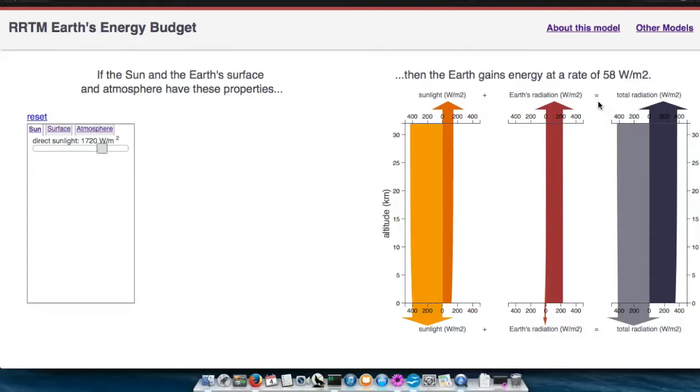Now there are three aspects of your planet that you can modify. There's the sun, and I just showed you how you can modify that. You click on the sun tab and you have the direct sunlight.